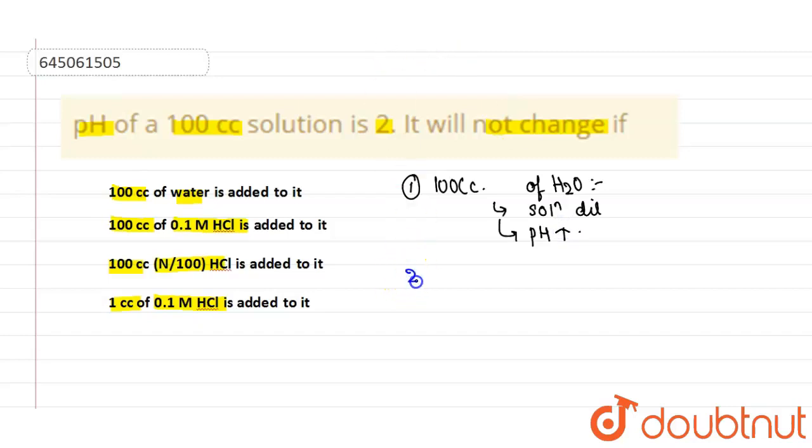Now the next statement. Here 100 cc of 0.1 molarity HCl is added. HCl will dissociate into H positive and Cl negative. The concentration of HCl is 0.1, so it will be 0.1.